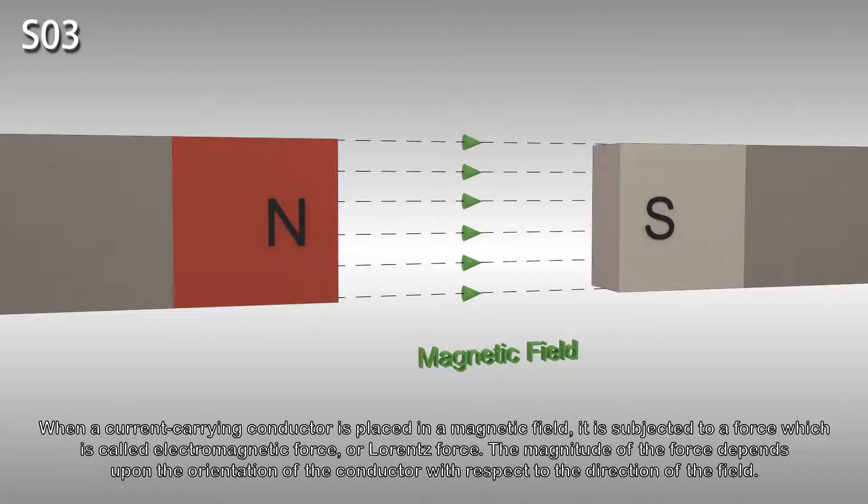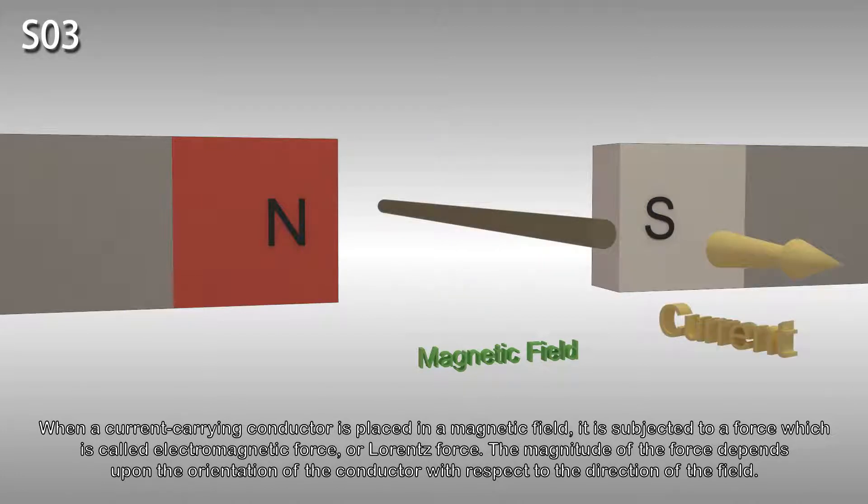When a current carrying conductor is placed in a magnetic field, it is subjected to a force called the electromagnetic force or Lorentz force. The magnitude of the force depends upon the orientation of the conductor with respect to the direction of the field.